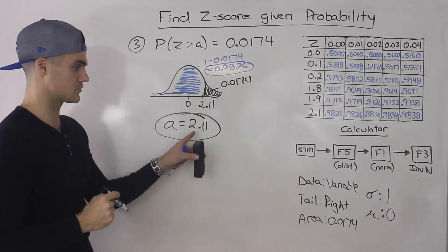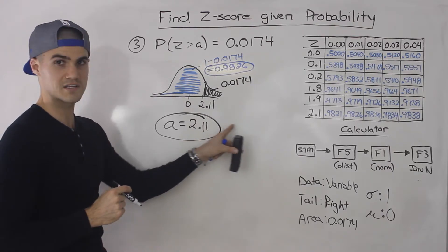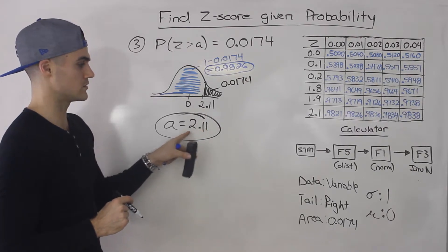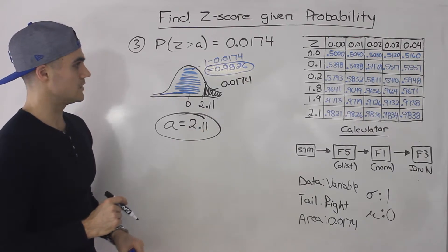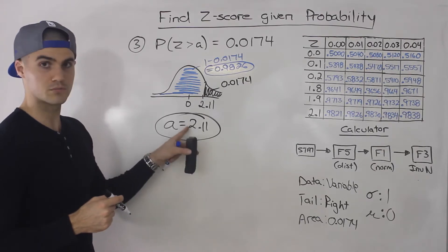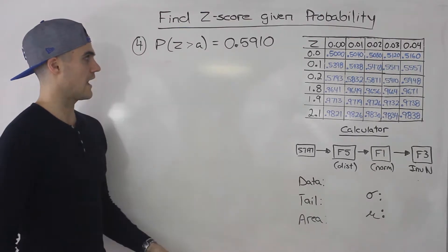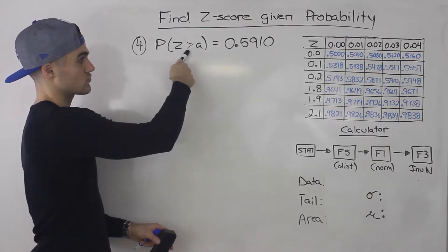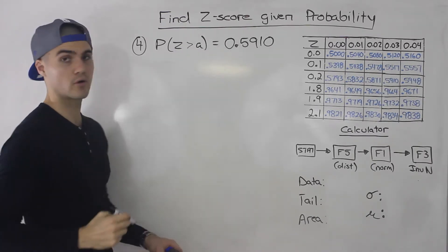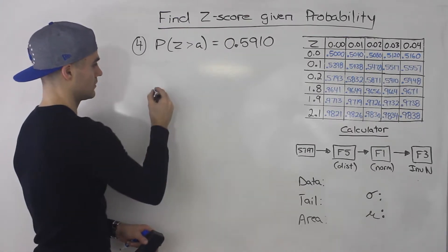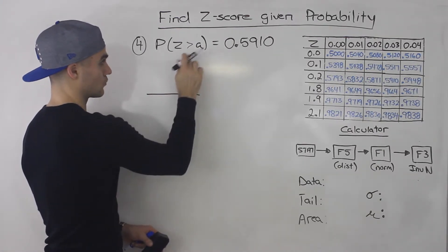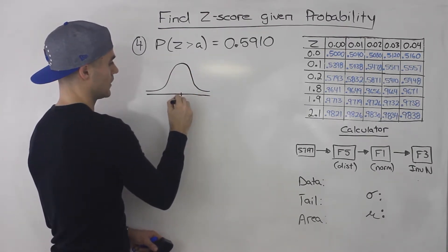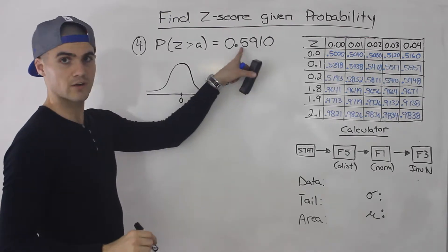So it would display something like x-inverse equals 2.11 — there might be some more decimals, but the first two decimal places should be 2.11. Whether you're using the table or using the calculator, you should be getting that same solution. Now for the fourth example, we have to find the z-score where the probability that z is greater than that z-score is equal to 0.591. Notice we're again given a right-tailed probability, but this probability is greater than 0.5.